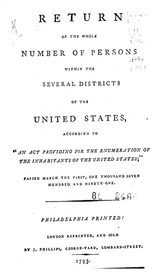Respondents providing write-in entries such as multiracial, mixed, interracial, or a Hispanic or Latino group — for example, Mexican, Puerto Rican, or Cuban — in the Some Other Race category are included here. Two or more races: people may have chosen to provide two or more races either by checking two or more race response check boxes, by providing multiple write-in responses, or by some combination of check boxes and write-in responses. The federal government of the United States has mandated that in data collection and presentation, federal agencies are required to use a minimum of two ethnicities — Hispanic or Latino, and Not Hispanic or Latino.